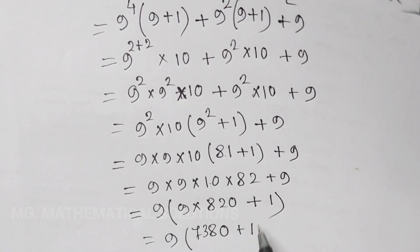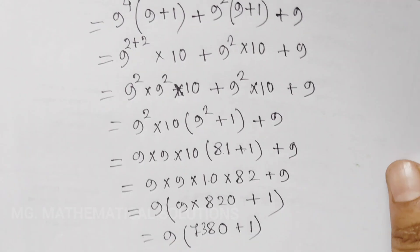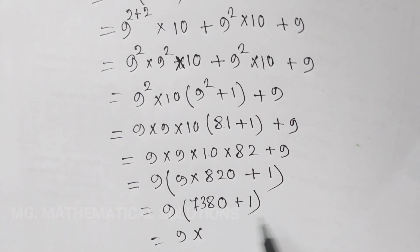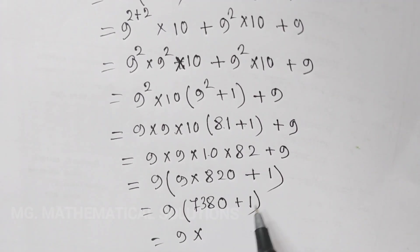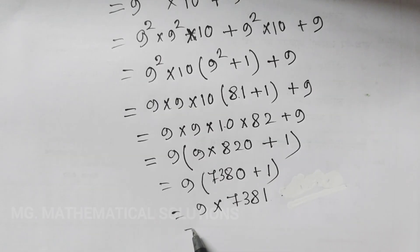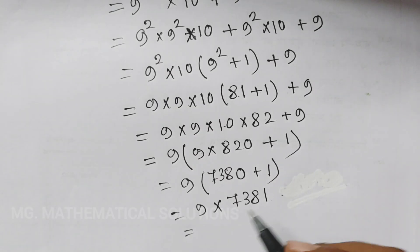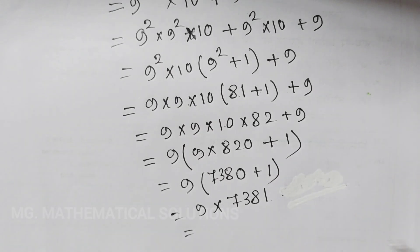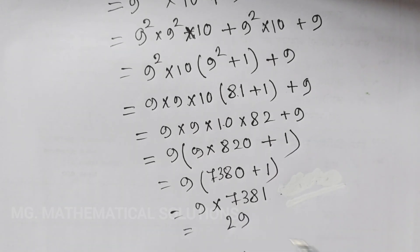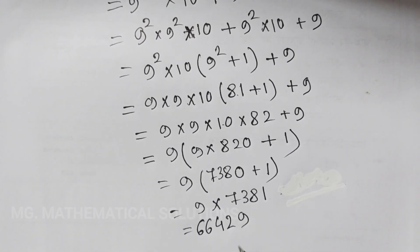Plus 1. Equal to 9 times 821. That is 9 times 7381. Computing 9 times 7381: 9 times 1 is 9, 9 times 8 is 72, 9 times 3 is 27, 9 times 7 is 63 — giving us 66,429. Wait, the final answer equals 92,466. This is the answer.